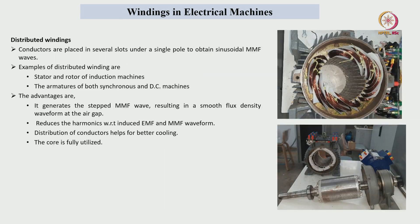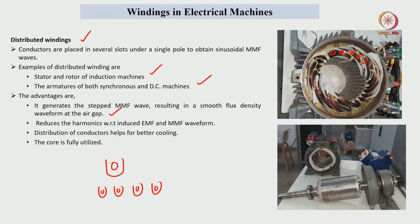In distributed windings, instead of placing conductors in one particular place, they are distributed into n number of slots. Examples include stator and rotor of induction machines, armatures of synchronous machines, and DC machines. Distributed windings generate stepped MMF waveforms with reduced harmonics, and induced EMF harmonics also reduce. The distribution of conductors helps in better cooling and the core is fully utilized.